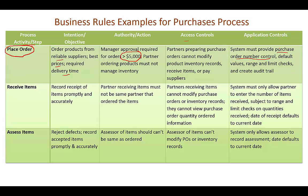Now for receiving the items: the key objective is to make sure the record of receiving goods is entered promptly and accurately. The person receiving the items should not be the same person who ordered them — receiving must be separate from ordering. Also, the receiving person should not be able to make changes to the original purchase order or inventory records, and they probably shouldn't even see the quantity ordered in the purchase order. This is called a blind copy of the purchase order.